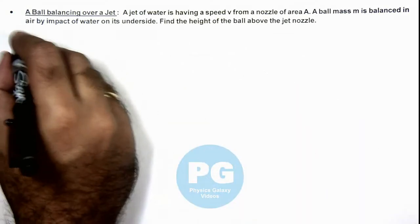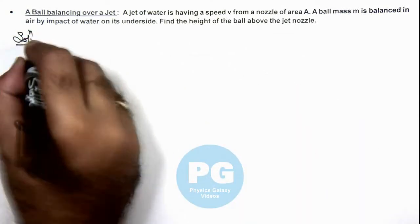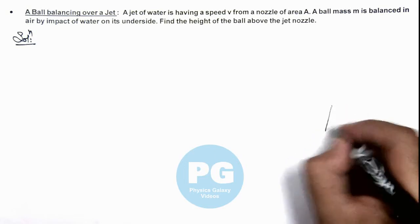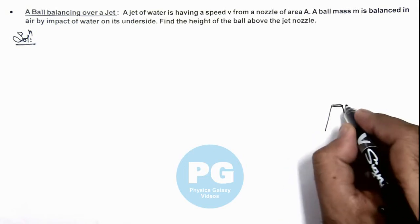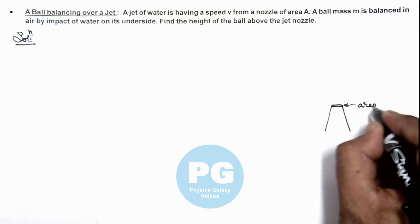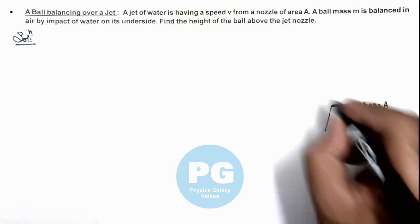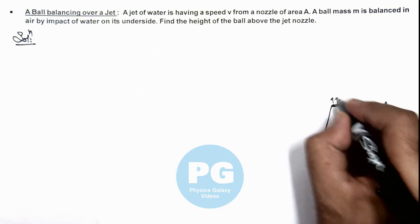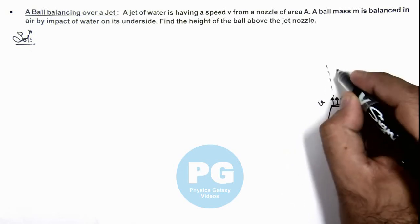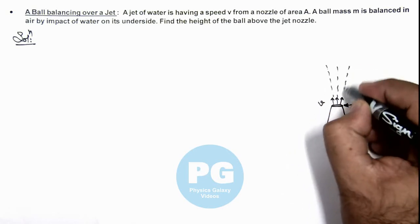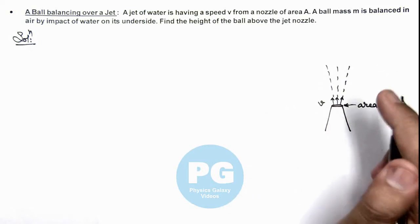Here, we can first draw the figure to understand it better. We are given that there is a water jet, and this jet nozzle is of area A, from which fluid comes out with velocity v. And as the water jet moves up, we know its velocity decreases and area of cross section increases.